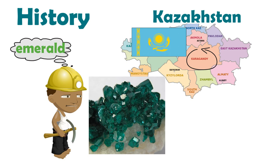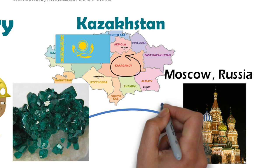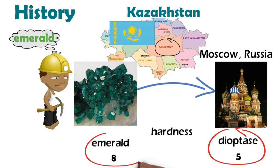Samples of the lustrous emerald green transparent crystals were sent to Moscow, Russia for analysis. However, they measured 5 on the Mohs hardness scale. Emerald has a hardness rating of 8, so they were easily distinguished.